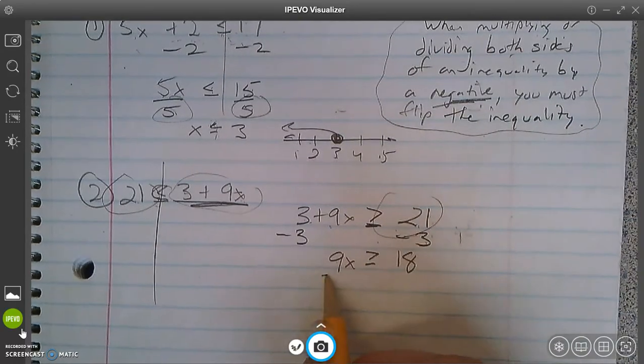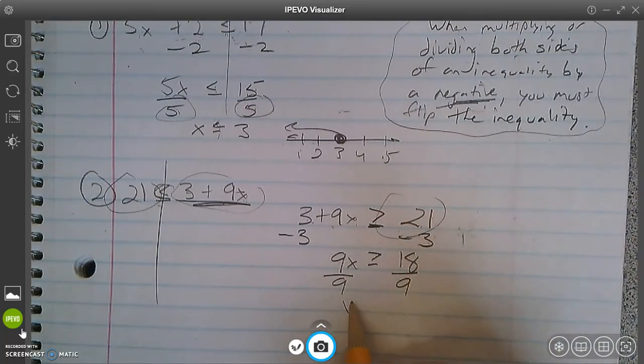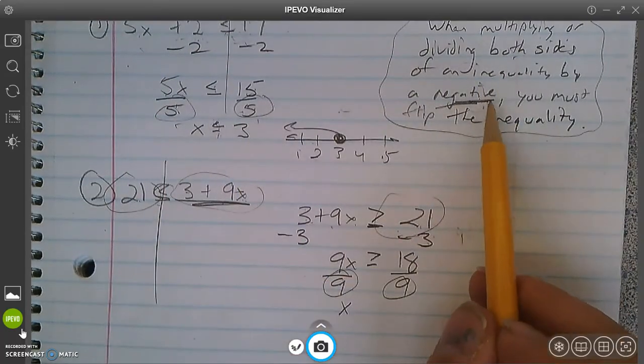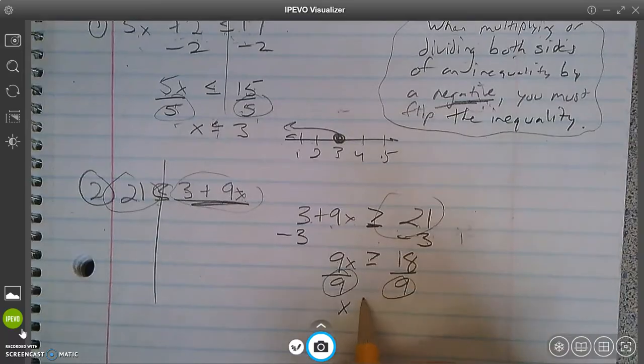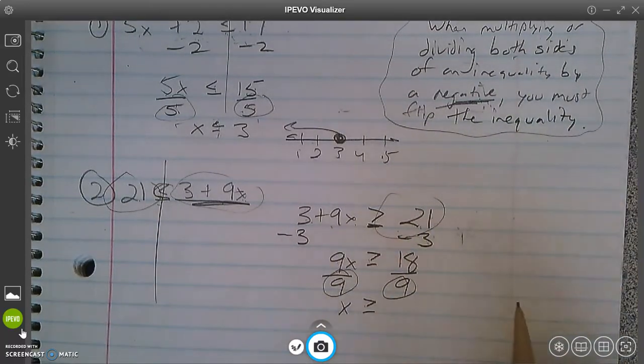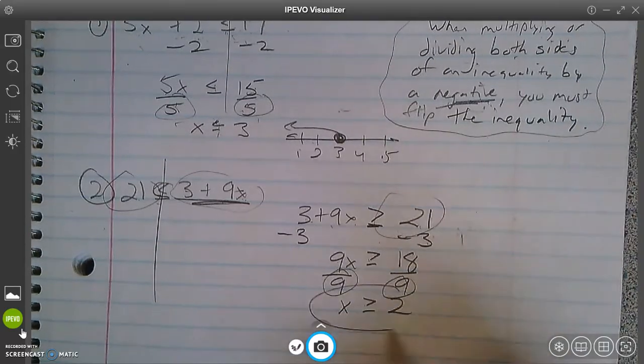9x greater than or equal to 21 minus 3 is 18. 9 times what? Opposite of multiplication is division. X. I'm dividing by a positive in this case, just like this one, not by a negative. So the sign stays the same. I'm always conscious of whether the sign changes when I'm multiplying or dividing both sides. It's an inequality. 18 divided by 9 is 2.